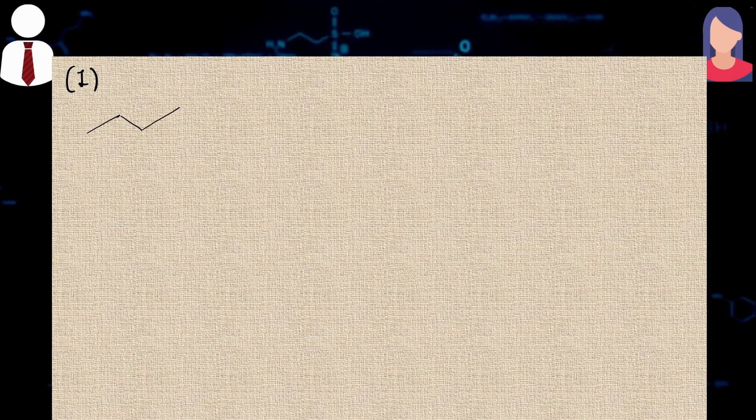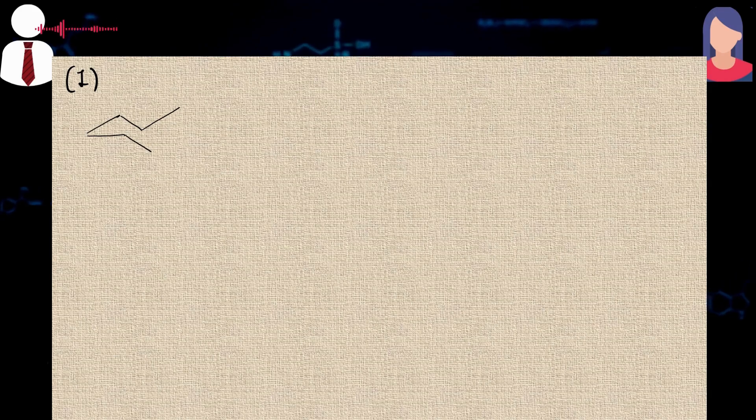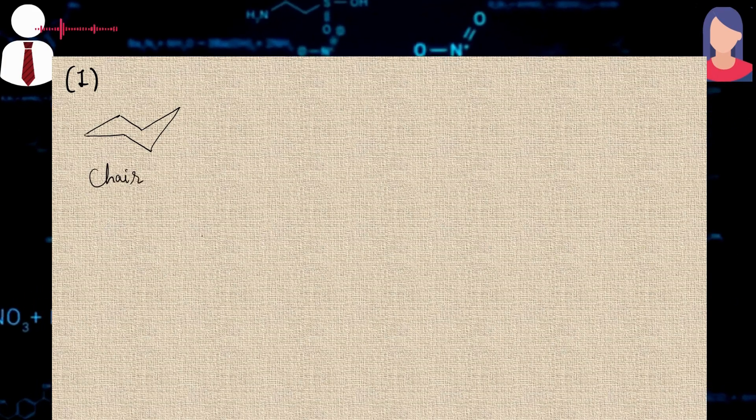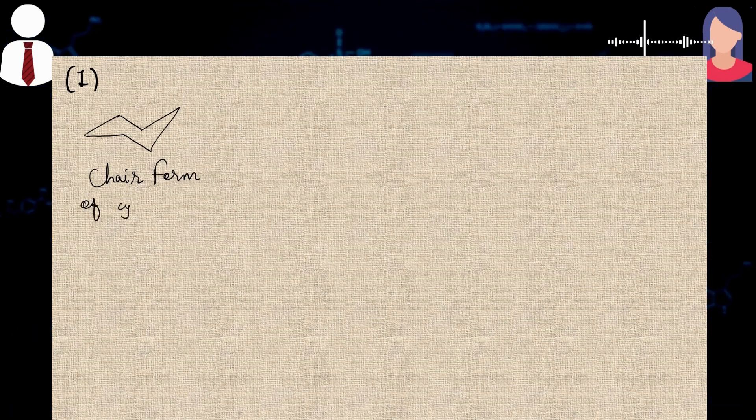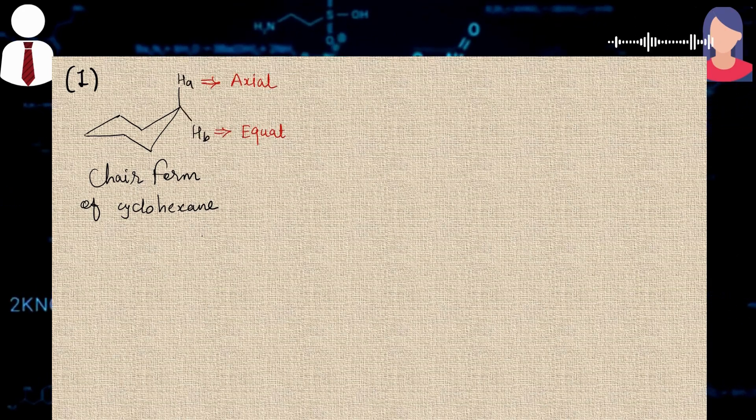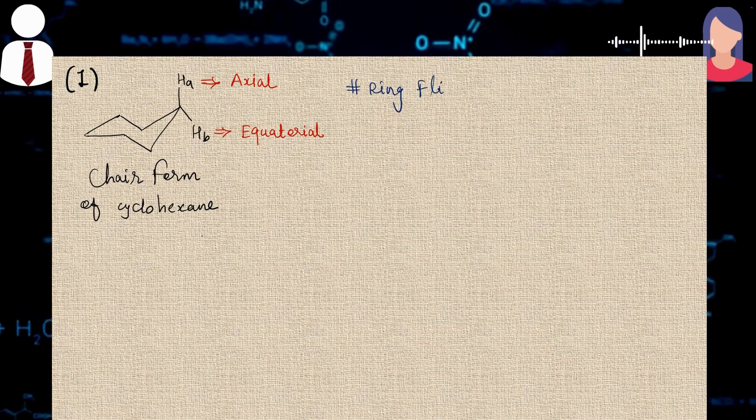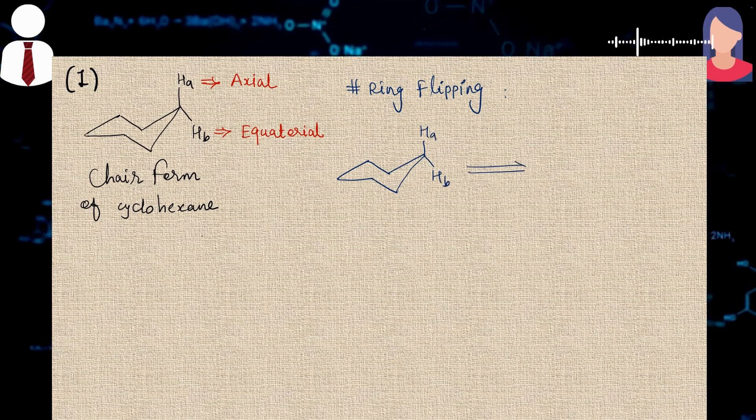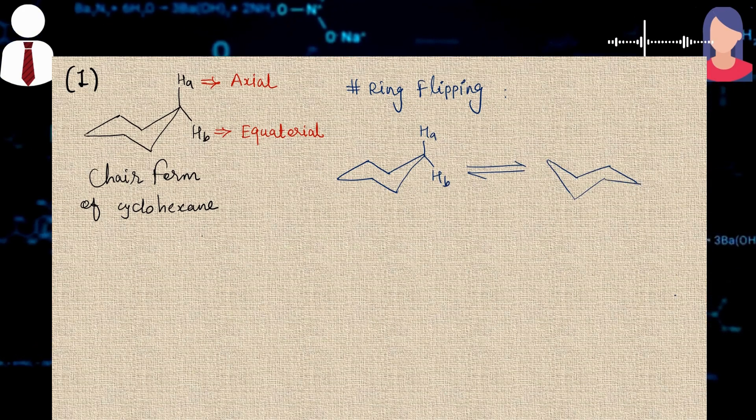He told me to draw the structure of cyclohexane. He asked me that when you observe the NMR spectra of this compound, then at low temperature you will find two signals, but when you increase the temperature then only one signal is observed. Why this thing is happening and explain everything in detail. I answered that cyclohexane exists in chair form and it carries two types of protons. One is at axial position and the other one is at equatorial position. Now with this chair form of the cyclohexane, continuously ring flipping is taking place. Ring flipping means the proton present at axial position changes to equatorial position and vice versa. And then it establishes an equilibrium.